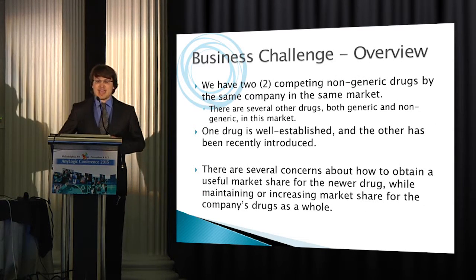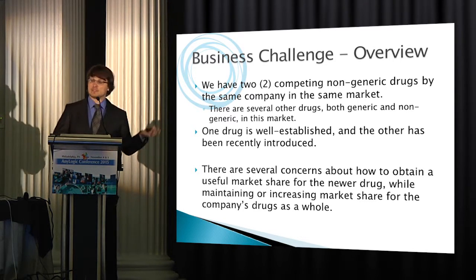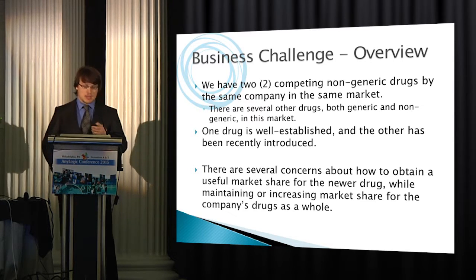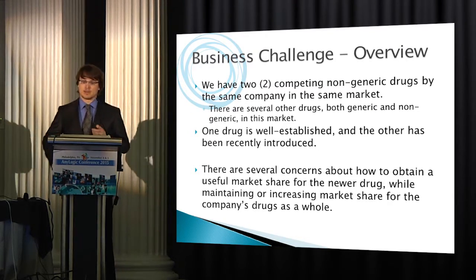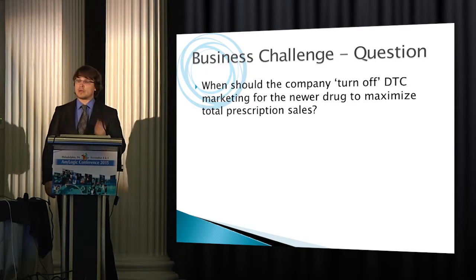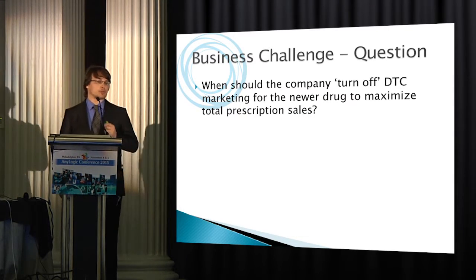This company has two competing non-generic drugs in the same market. One is a very well-established drug and tends to be an industry leader. The other was very recently introduced. They had to look at some trade-offs: how do they make sure their new drug, which has a larger lifespan in the non-generic market, could get useful market share without cannibalizing their total market share? But the major question they had was: when should this company stop their DTC marketing for the newer drug so they can maximize total prescription sales?